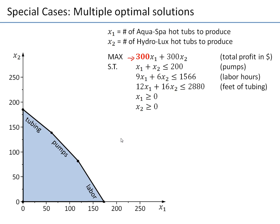So we might ask ourselves: what changes now? First of all, notice that the feasible region does not change because the constraints are exactly the same as they were. We still have the same constraints, nothing changed there. So the feasible region is still the same.